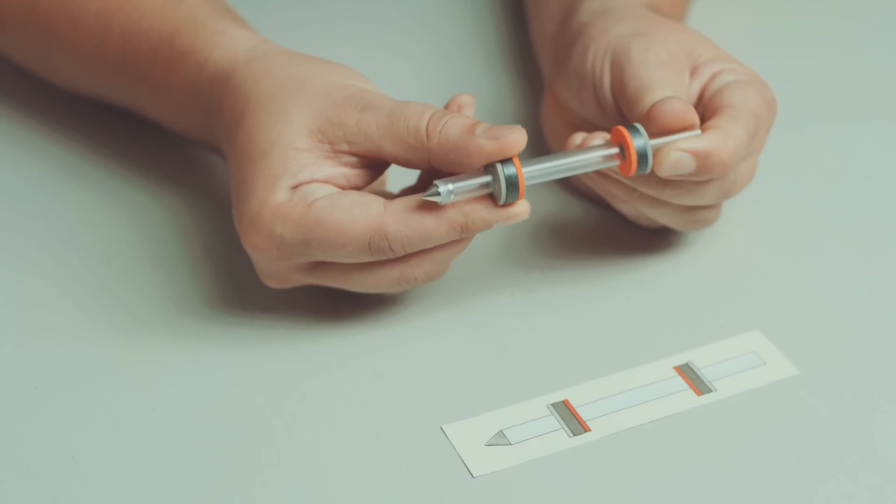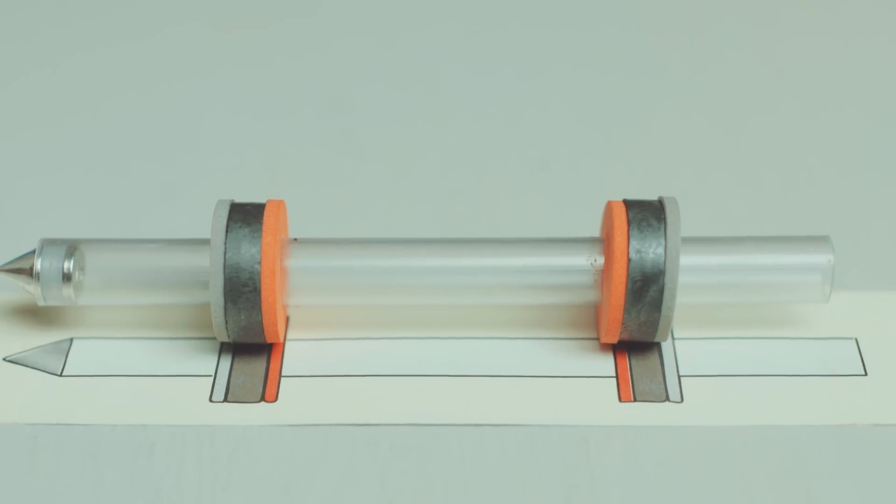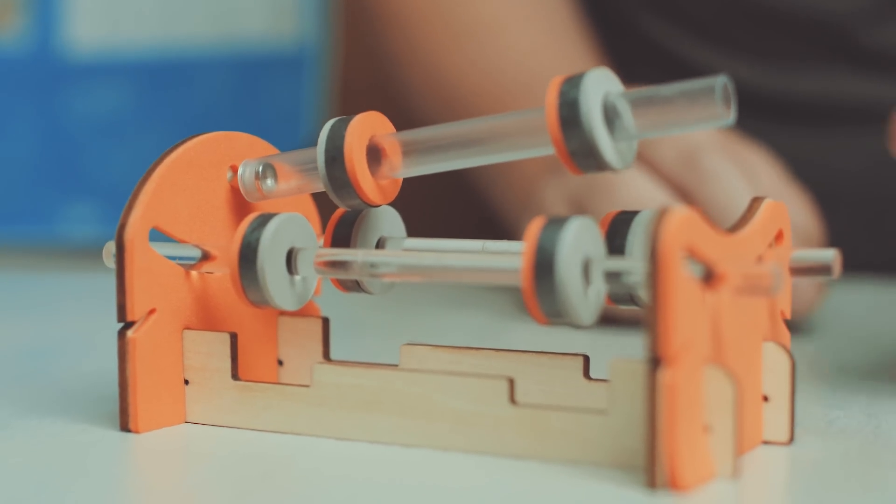Slide the two magnets on the tube so it lines up with the card. Place the cone tip of your pencil holder into the circle on the wooden frame. See if it floats.